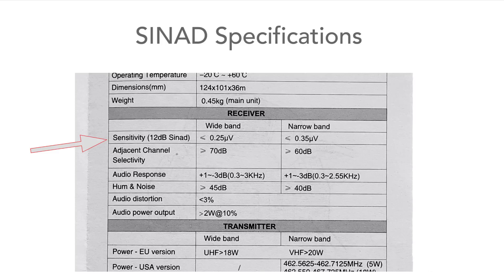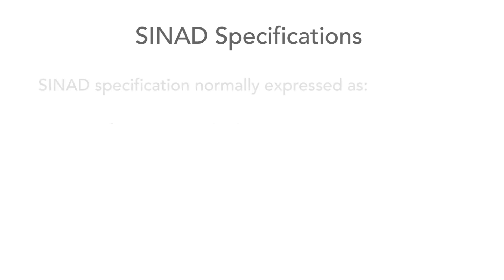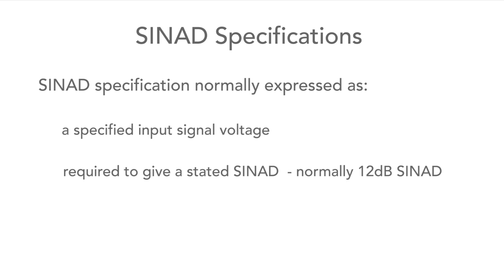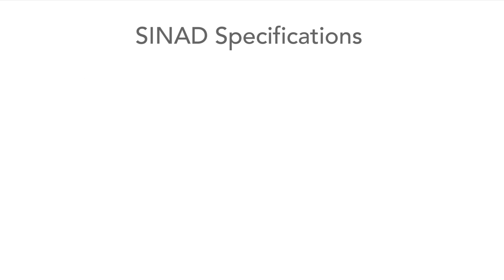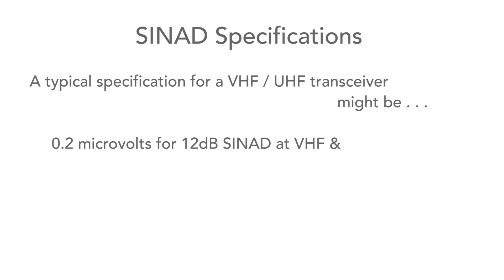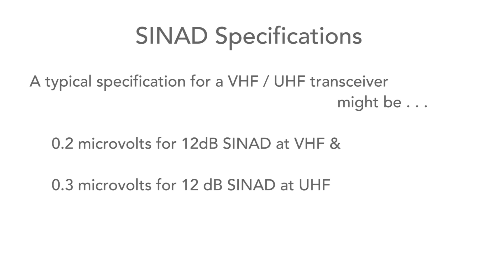The format for SYNAD specifications is normally given as a certain signal input voltage to the radio needed to achieve a certain value of SYNAD. 12 dB SYNAD is the normal ratio used. For example, a typical specification might state that receiver sensitivity is 0.2 microvolts for 12 dB SYNAD at VHF, and at UHF it might be slightly less sensitive, requiring 0.3 microvolts for 12 dB SYNAD.